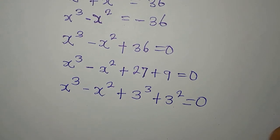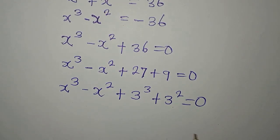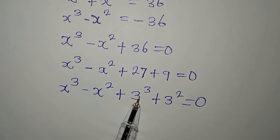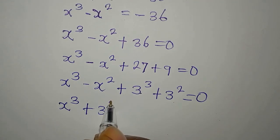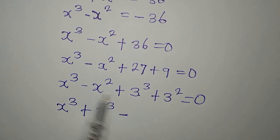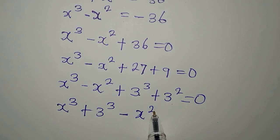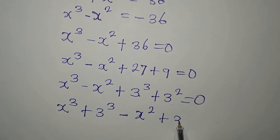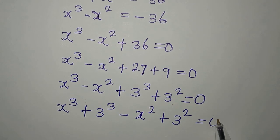Now I have expressed everything in the same form. This can be written in a grouped form — what I will do is regroup. This and this will be combined, and this and this will work together. So I have x to the power of 3 plus 3 to the power of 3, then minus x to the power of 2 plus 3 to the power of 2, and everything here is equal to 0.